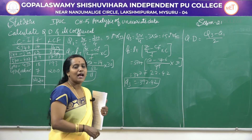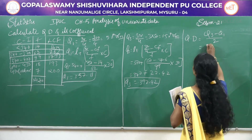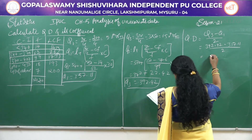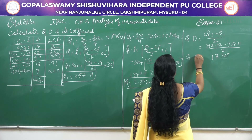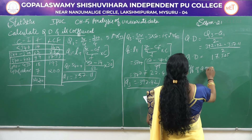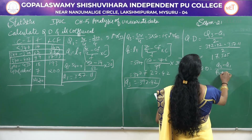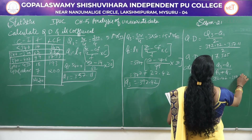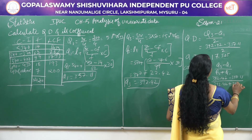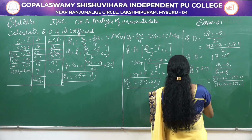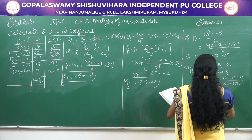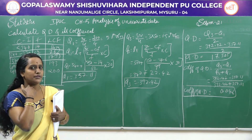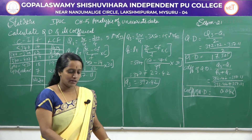Find out QD and coefficient of QD. Substituting: QD = (392.42 − 357.11) / 2 = 17.505. This is your QD value. Coefficient of QD = (Q3 − Q1) / (Q3 + Q1) = (392.42 − 357.11) / (392.42 + 357.11). After simplification, the coefficient of QD is 0.046. This is how the procedure continues for all QD problems.